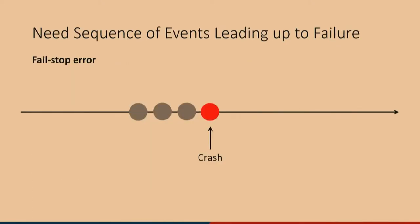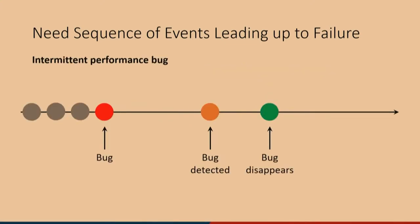Unlike a fail-stop bug, where once it fails we can afford to immediately enable effective heavyweight tracing and logging, intermittent bugs go away quickly. Collecting fine-grained traces by the time we detect a bug is already too late. What we're missing is the sequence of events leading up to the bug. To be honest, I really pity those interns assigned to reproduce these bugs without progress for weeks on end. It's not uncommon to have open bug tickets stretching months to a year.